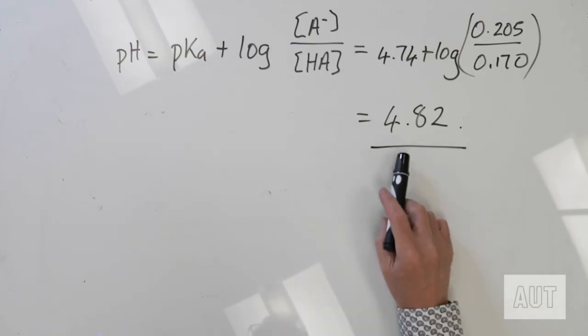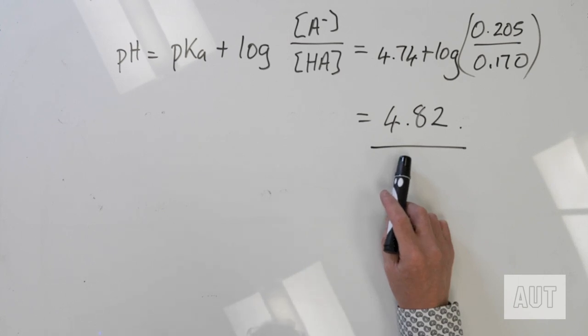We started off with our buffer solution at a pH of 4.92. We added a reasonable amount of strong acid — HCl — and the pH only dropped by 0.1 of a pH unit, which is a small change given that you're adding quite a bit of HCl. These are the sorts of calculations you'll be expected to do with buffer solutions. A lot of it is stoichiometry, and then you use your Henderson-Hasselbalch equation.